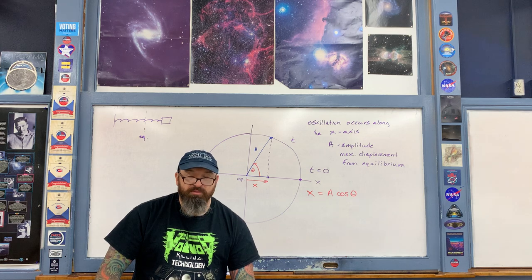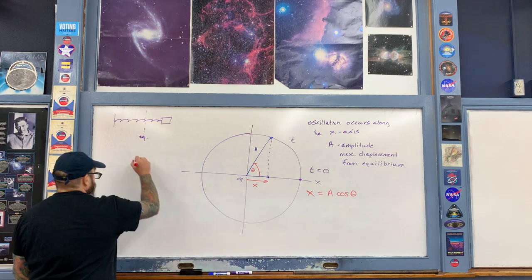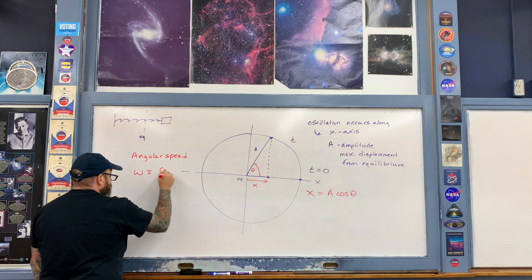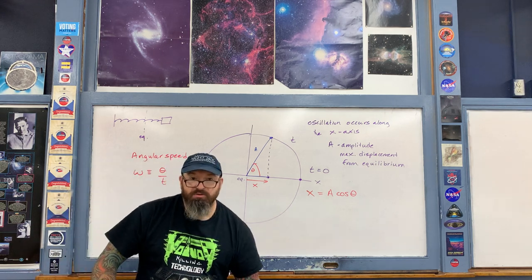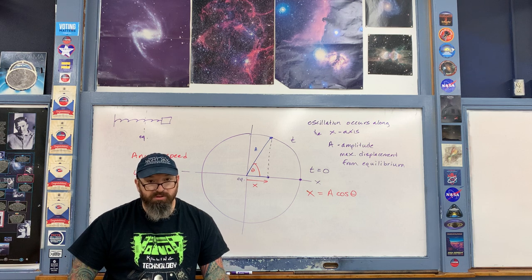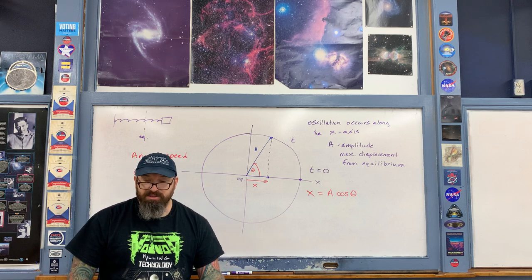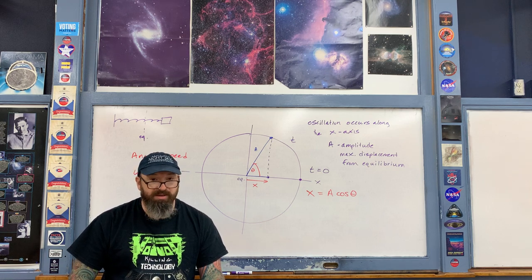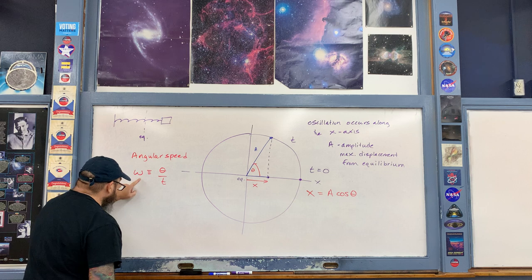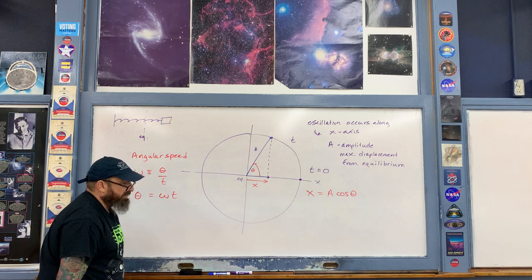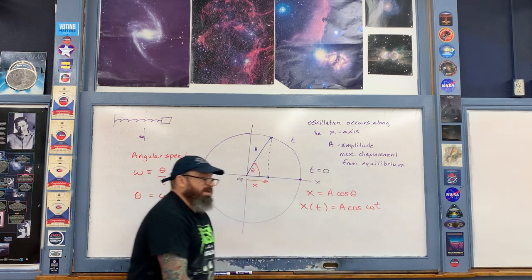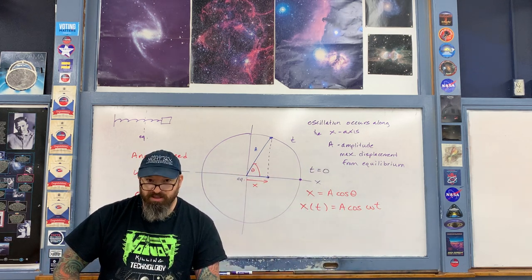Angular speed ω is defined as angle divided by time — how much angle an object rotates through per unit time. Cross-multiplying gives θ = ωt. Substituting into our position expression, we get x = A cos(ωt) as the position of the oscillator as a function of time.